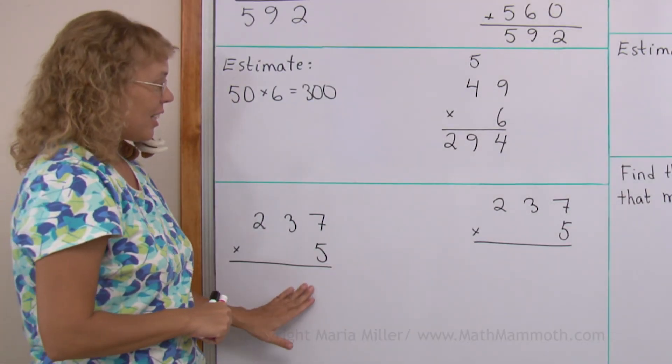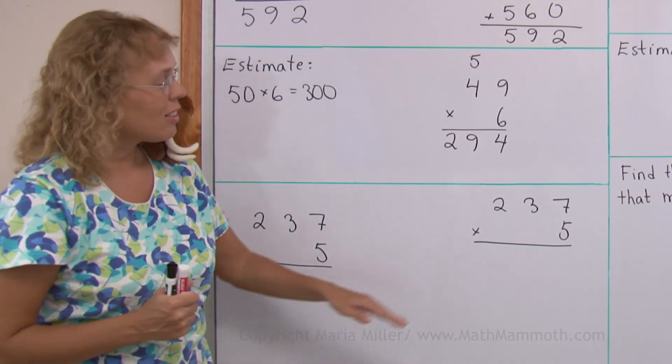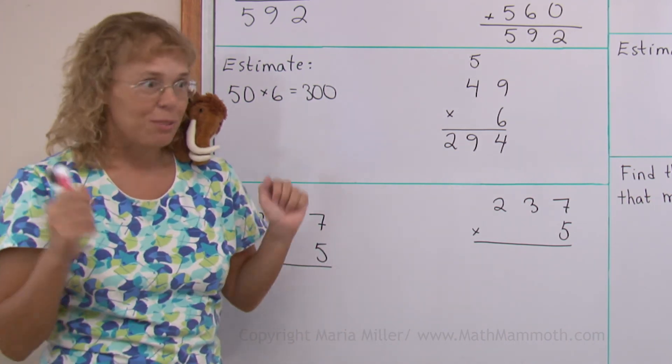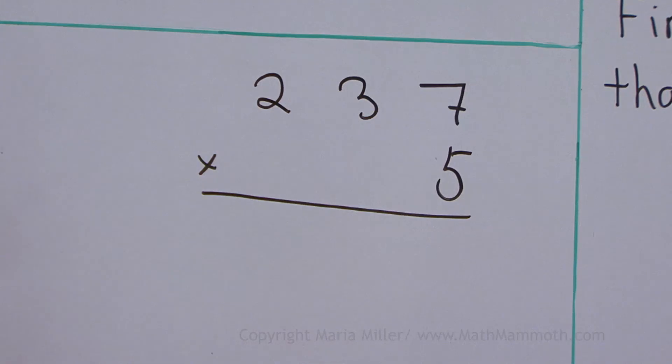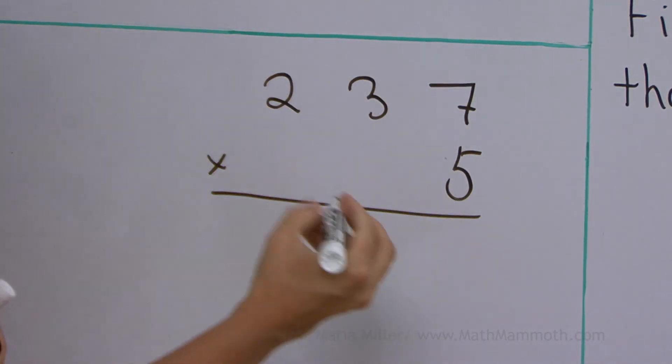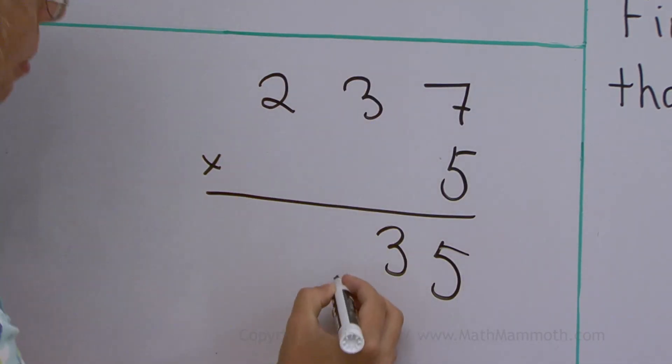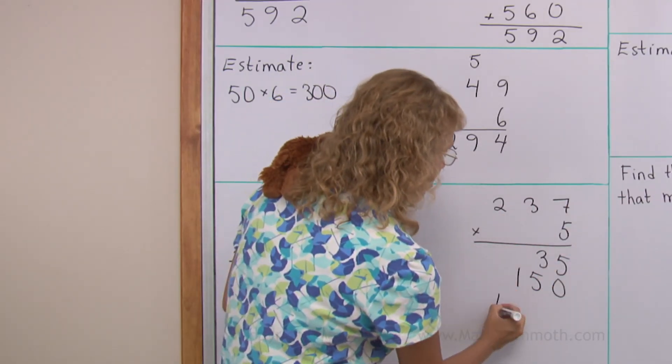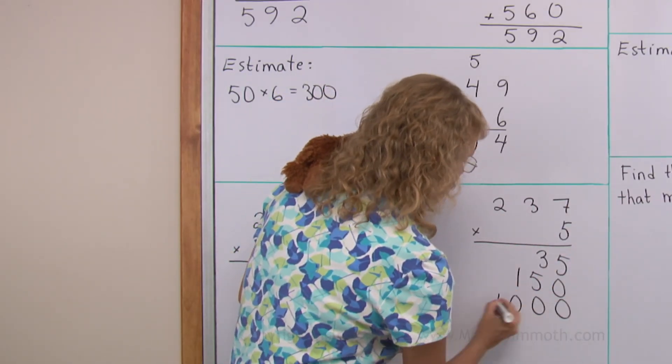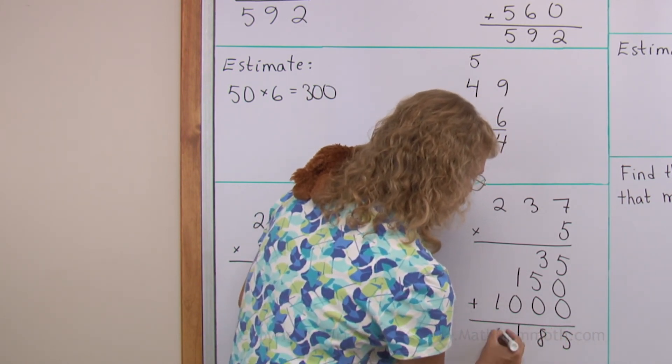Now let's do the same with a three digit number. And for comparison, I will first do it the easy way over here. 5 times 7 was 35. 5 times 30 would be 150. And 5 times 200 is 1000. That's our easy way. And lastly, we added. 5, 8, 1, 1.